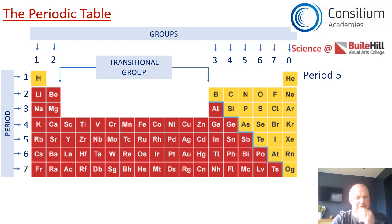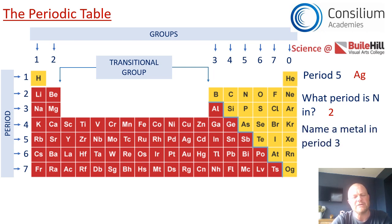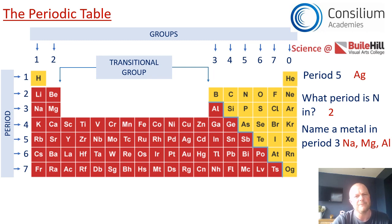If I was to ask you to name an element in period five, you'd find period five and name any element — there are too many to choose from. I chose Ag, which is silver. If I was to ask you which period N is in, N is a non-metal — it's in period two. And if I was to ask you to name a metal in period three, there are three possibilities: Na, Mg, or Al. It can't be any of the others because they're non-metals.